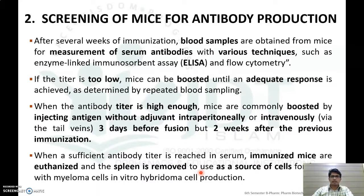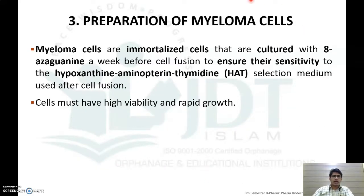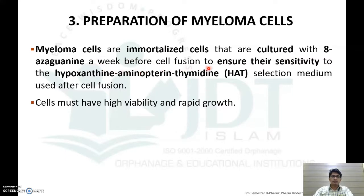To prepare the myeloma cells, they are immortalized by culturing with 8-azaguanine one week before the fusion to ensure their sensitivity to hypoxanthine-aminopterin-thymidine (HAT) selection medium used after cell fusion. The cells must also have high viability as well as rapid growth.